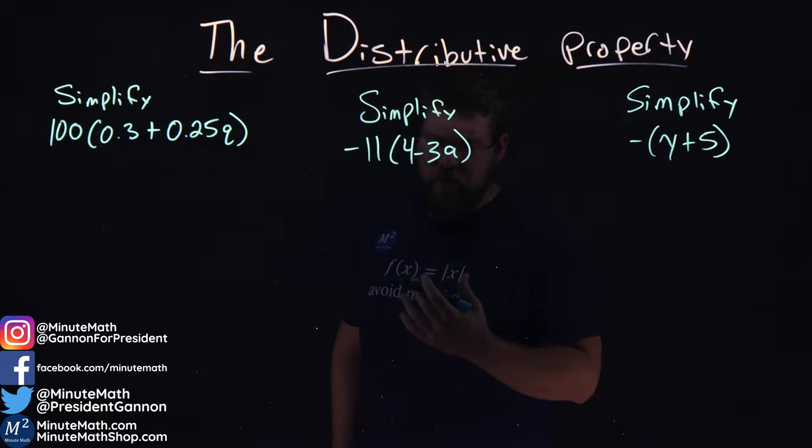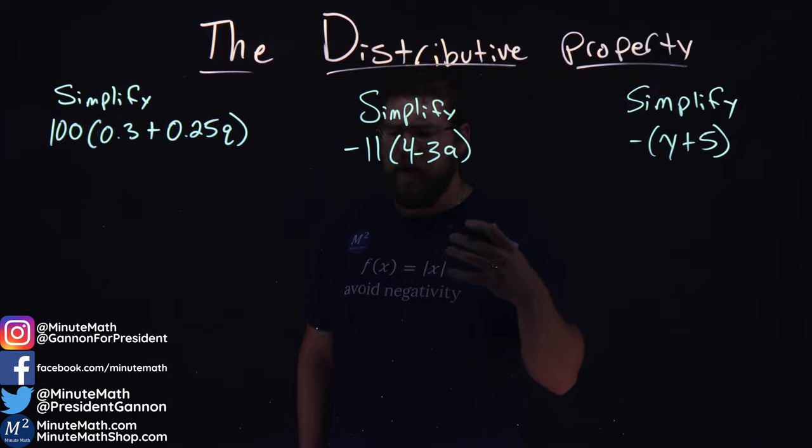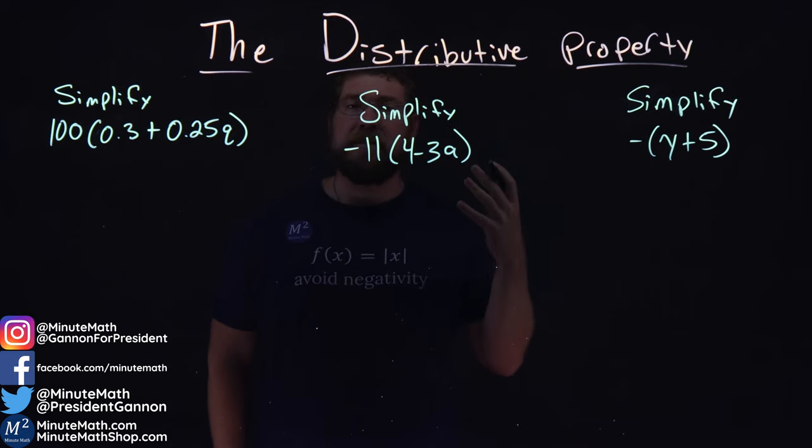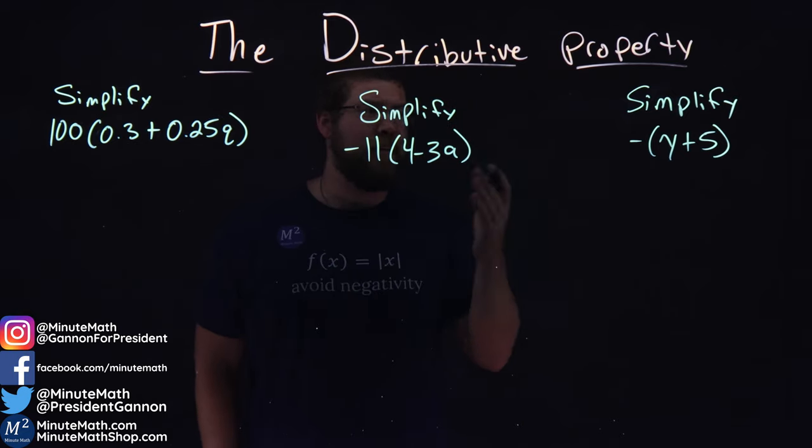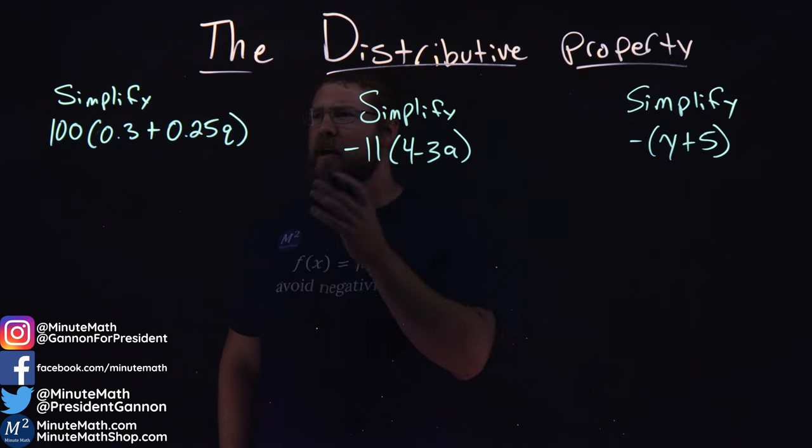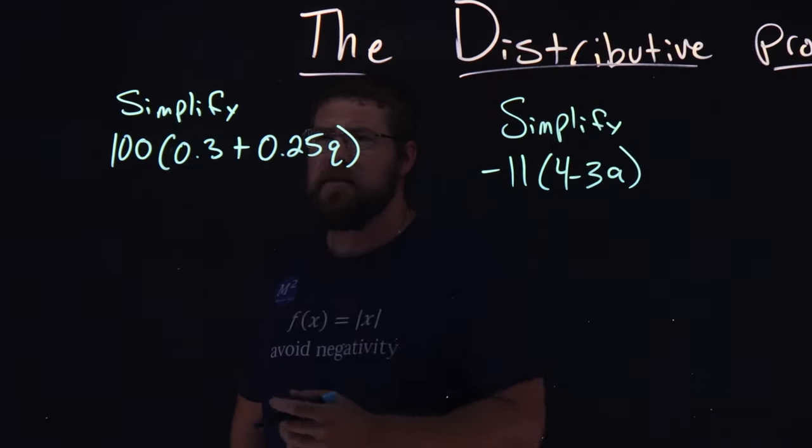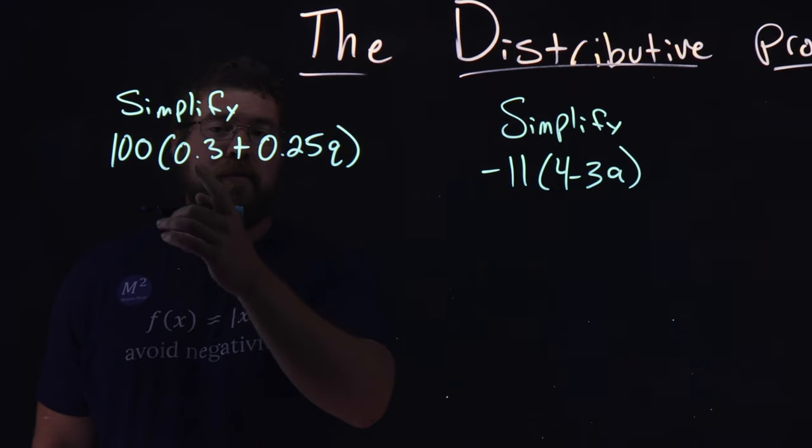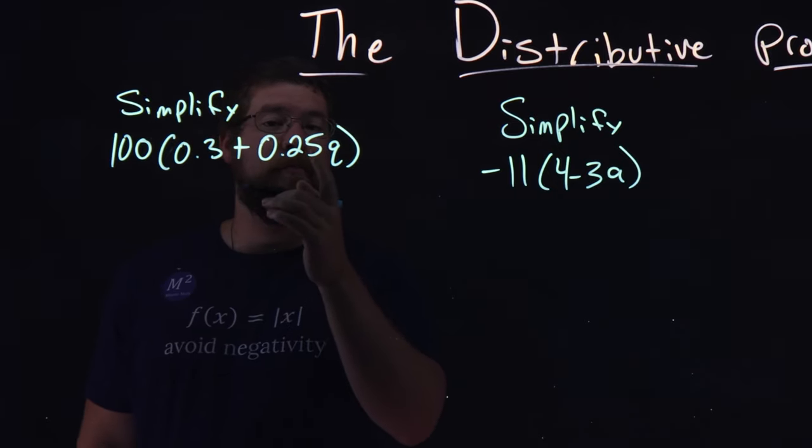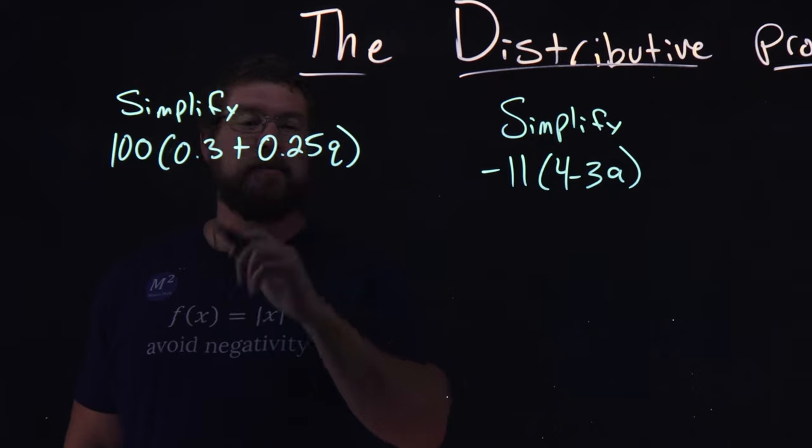In a previous video, we went over the basics of the distributive property. So, the best way that I think to see this in action is to well see it in action. So, we have three examples here that review the distributive property. Our first one here, simplify 100 times 0.3 plus 0.25q, and that whole thing is in parentheses.